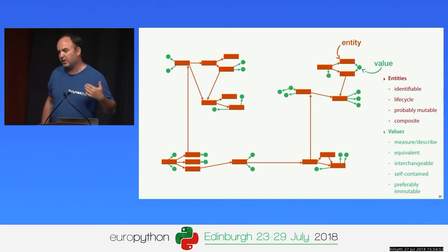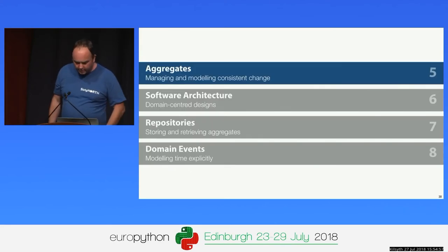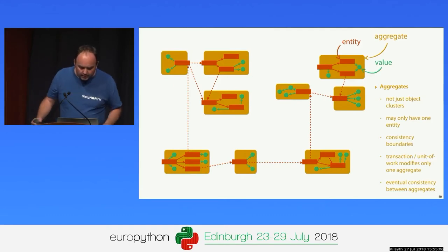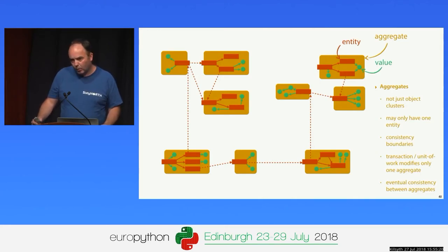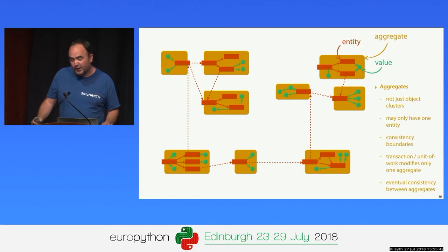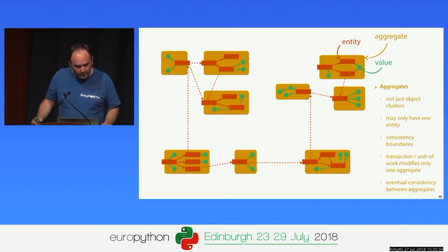What DDD really brings is what happens next: aggregates. An aggregate might look like just a cluster of closely related entities, and that's partly true, but it's much more than object clusters. Although an aggregate may have more than one entity, often aggregates will have only one entity, and there are good reasons to prefer that. Aggregates really are consistency boundaries — we require that the model is always consistent within an aggregate, but we allow eventual consistency between aggregates. In your code, aggregates don't really exist as a separate class; it's a convention you follow about how you use your entities.